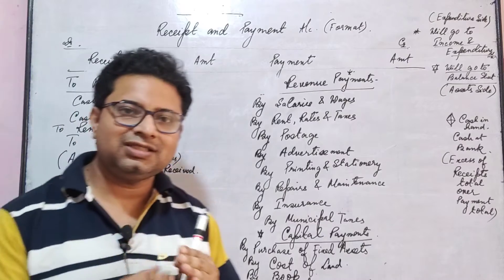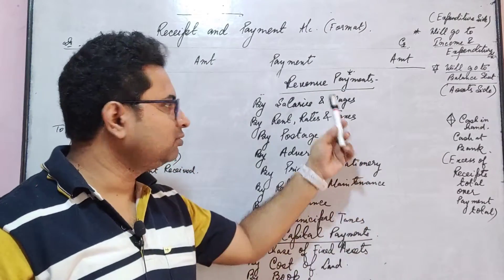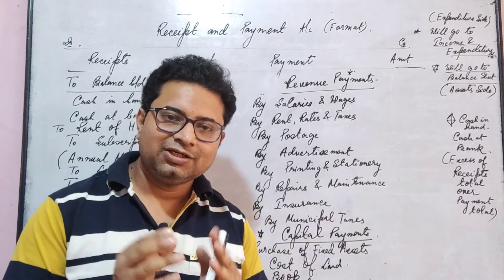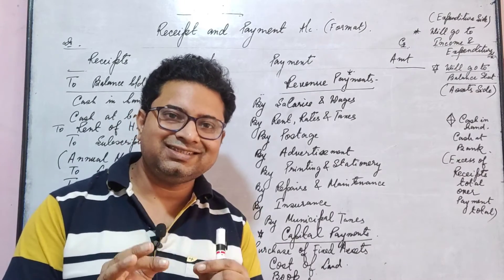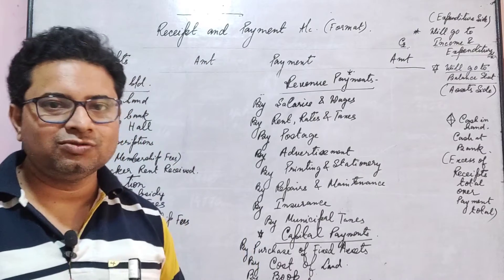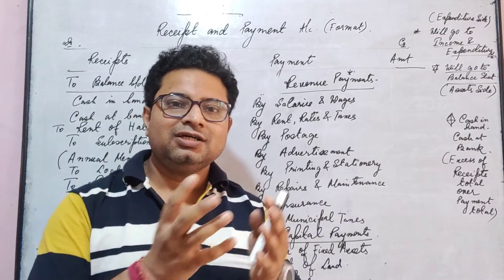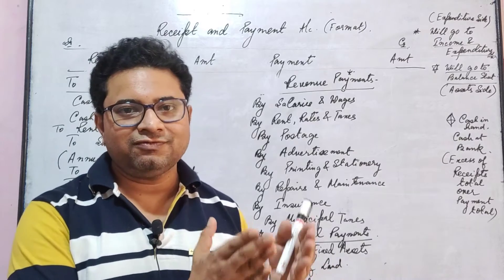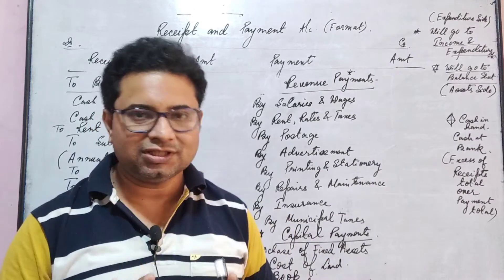Let us discuss one by one what the receipts are. First of all, there might be some opening balance. There could be some opening balance at the start of the year. Generally, the year starts on 1st April and ends on 31st March.